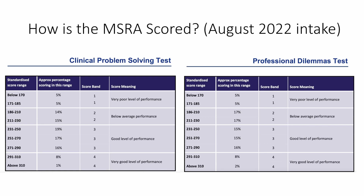Now if you've ever wondered how the MSRA is scored, this is the August 2022 intake banding results. The scores will be standardized and placed into bandings based on your score range, with band 4 being the highest and band 1 being the lowest. For anyone who wants to do anaesthesia, the cutoff point was 532 during my year, which means you have to score at least in the top 15% to get a chance at the interview. It would be about the same for other competitive specialties, but I don't have the exact numbers.